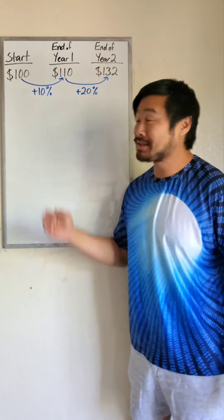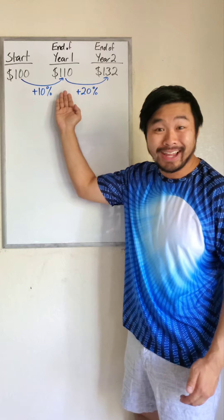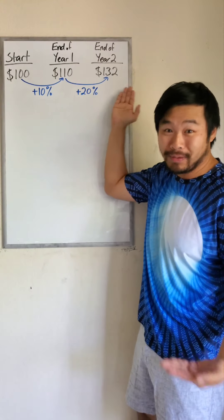Say that you bought $100 in stocks, and at the end of year 1, the stocks went up 10%, and at the end of year 2, the stocks went up 20% from that.